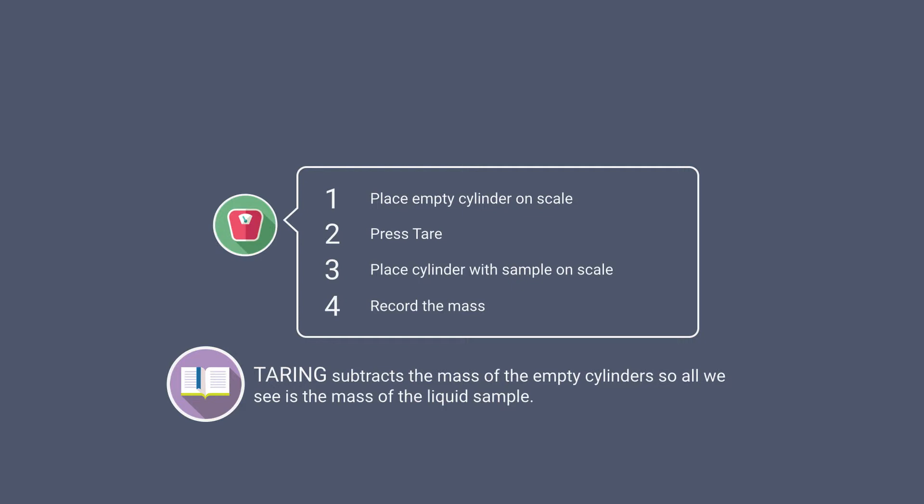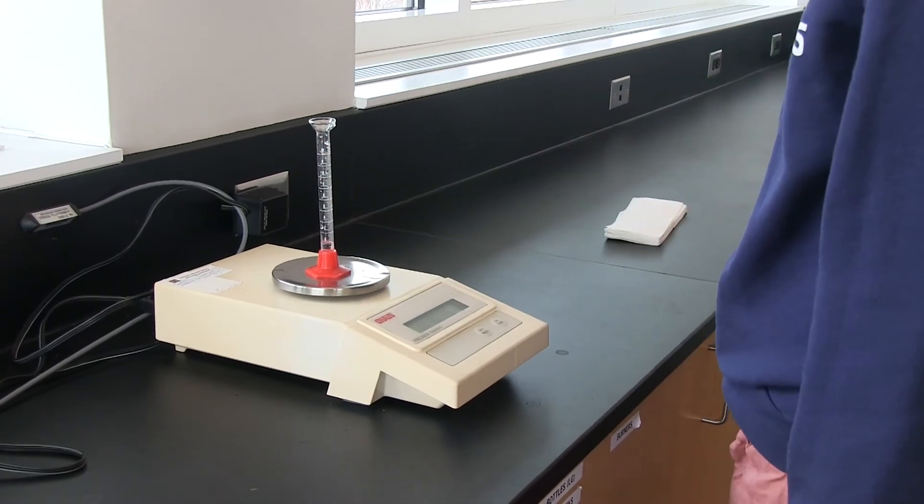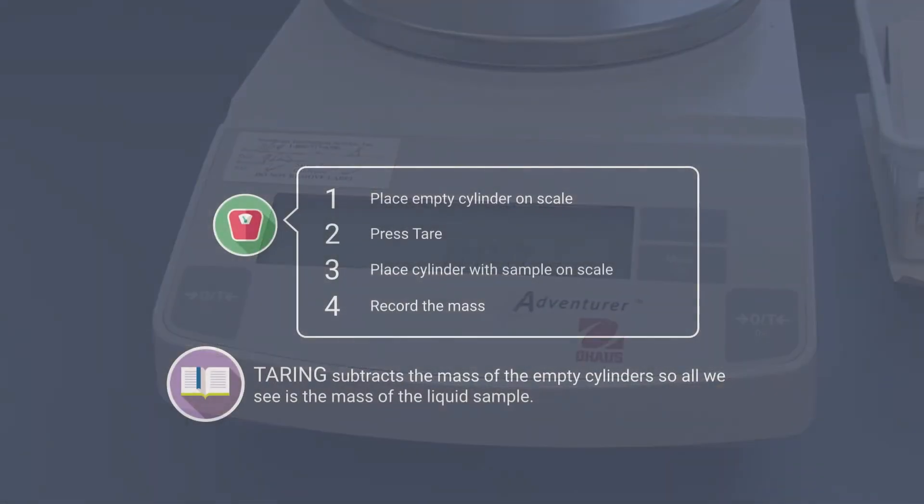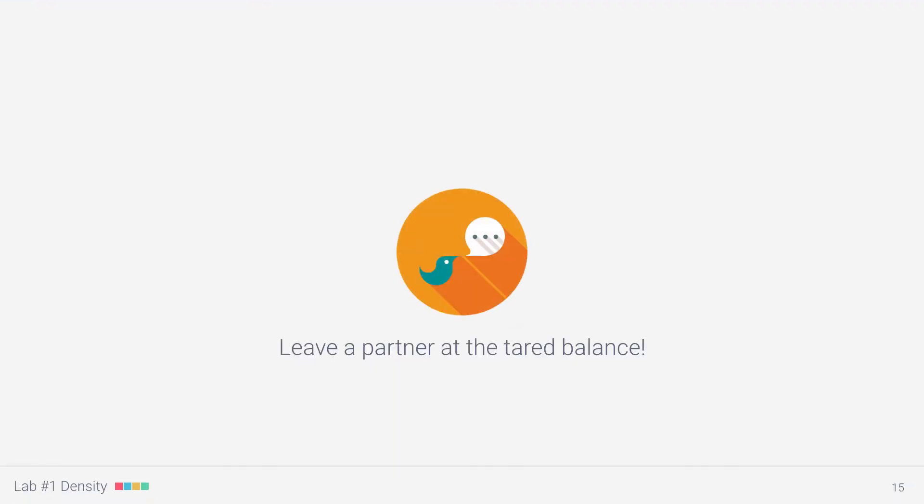To tare, turn on the scale, place the empty cylinder on it, and then press the tare button. The scale should now read zero because the mass of the empty cylinder has been subtracted. Leave one partner at the scale to make sure no one else zeros out your taring while the other person heads over to the hood to get the liquid ethanol from your teacher.